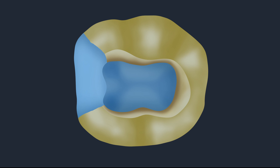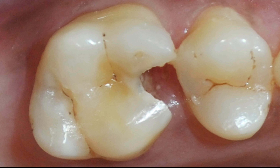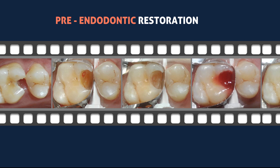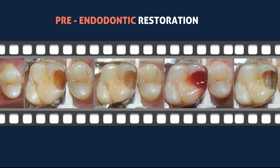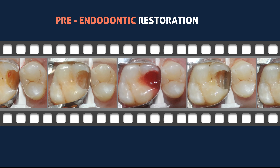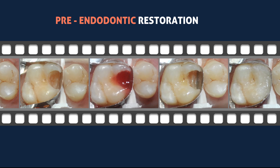Let's see a clinical case. This is a maxillary molar with mesial decay. I managed this case by doing a pre-endodontic restoration in a very simple and easy way. First, caries is excavated and we notice there is a pulp exposure. While doing a composite restoration, there may be pulpal bleeding, so to avoid that, that area is temporarily sealed with composite resin material without etching and bonding.